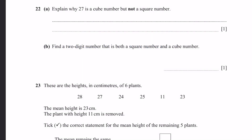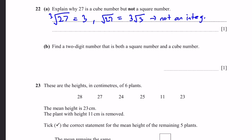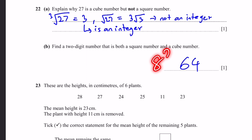Question 22. Explain why 27 is a cube number but not a square number. The cube root of 27 is 3, which is an integer. But the square root of 27 simplifies to 3√3, which is not an integer. Therefore 27 is a cube number but not a square number. Also, find a two-digit number that is both a square and a cube number: 64, because 64 equals 8 squared and also equals 4 cubed.